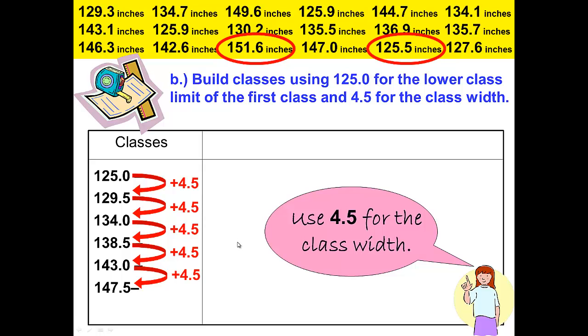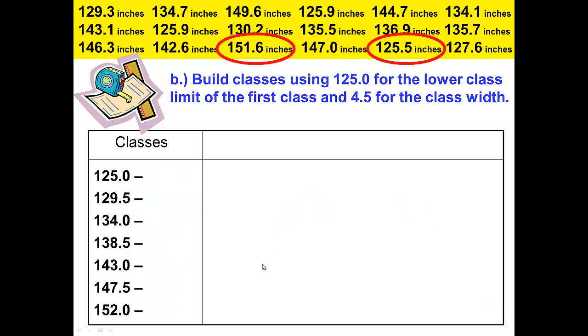147.5 is not greater than 151.6, so we still need another class limit. We'll add 4.5 again to 147.5 and that gives us 152.0. Since 152 is greater than 151, we are finished. That is how we know when to stop our classes or when we have enough classes.